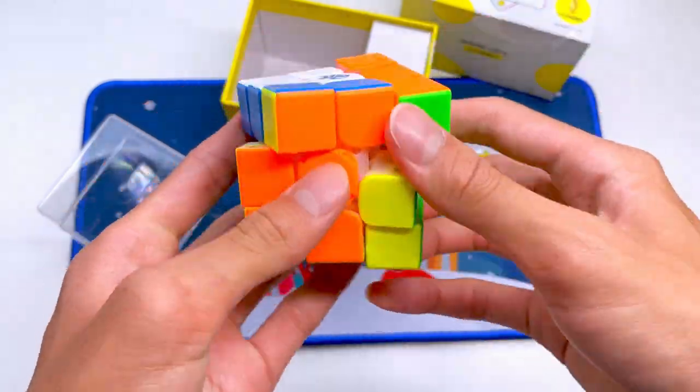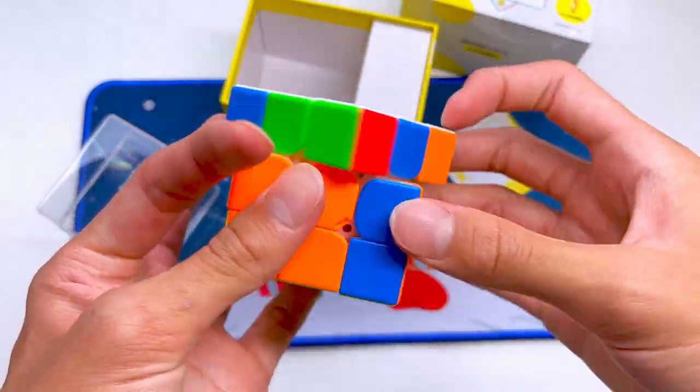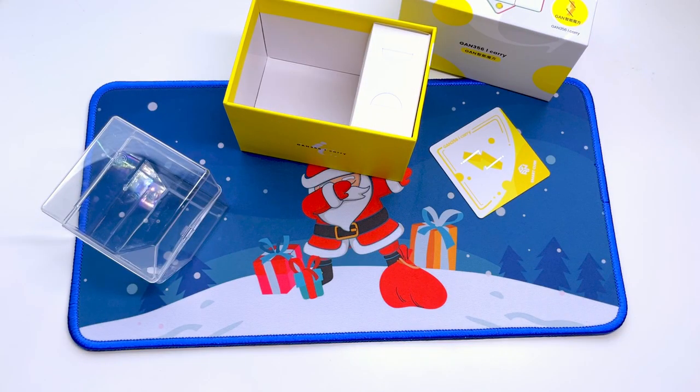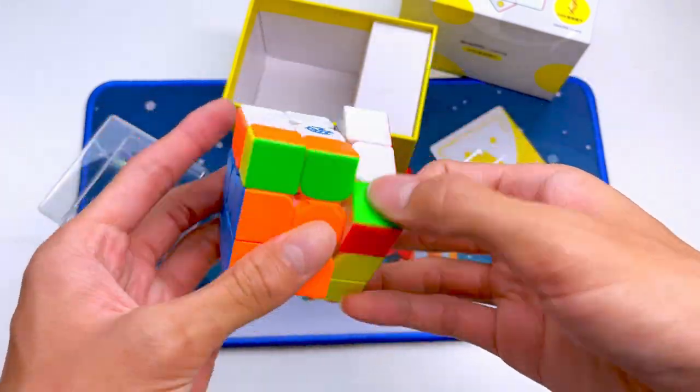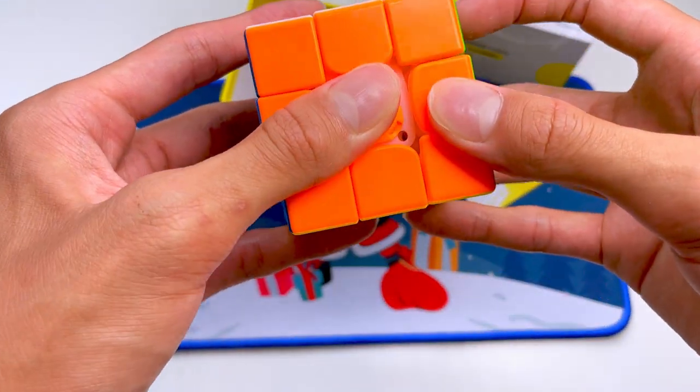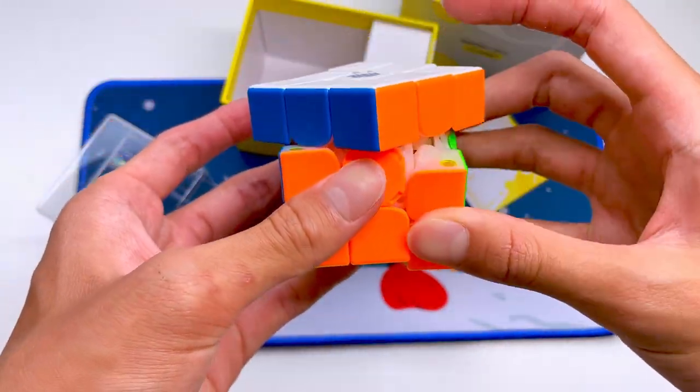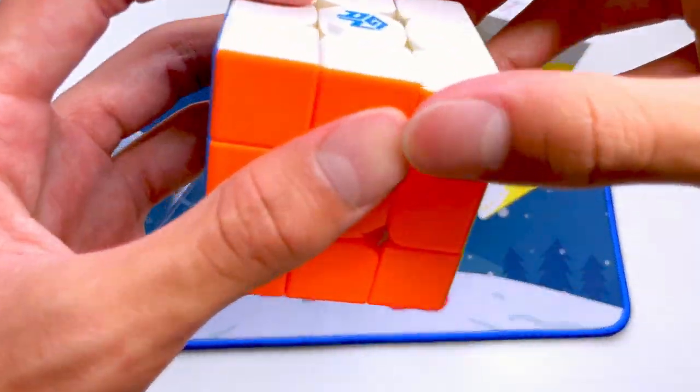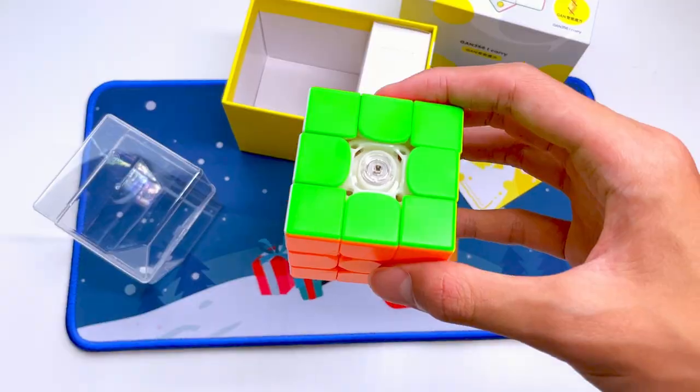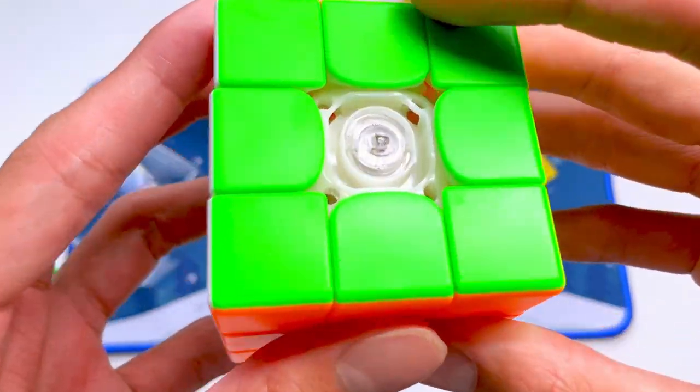All right, so let's get into some first turns. Wow, I mean I don't know if you guys can hear it, it sounds a bit hollow, but it does turn pretty well. It does feel like a Gan cube, but it does feel quite tight. Let me see the tensions. Yeah, it is super tight right now. I wonder if I can loosen this. Oh, can I even take the center caps off?